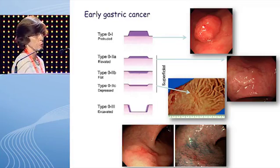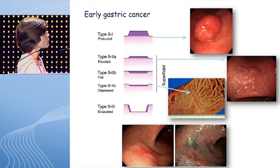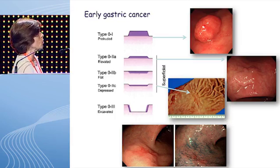You all know that in most countries — Japan being an exception because of its screening program — gastric cancer does not present as early gastric cancer. This entity corresponds to cases in which the tumor develops only in the mucosa and submucosa, not reaching the muscularis propria. There is a classification of the different types of early gastric cancer, which is essentially an endoscopic classification, and the different types can be easily recognized by endoscopists.